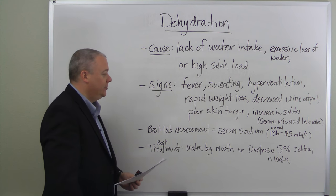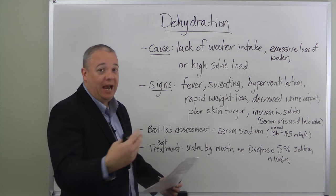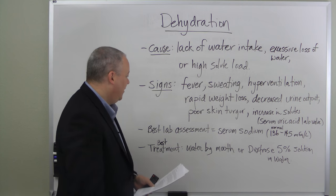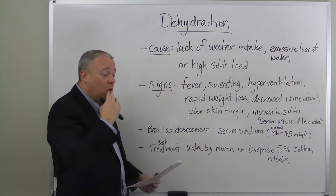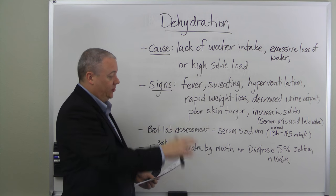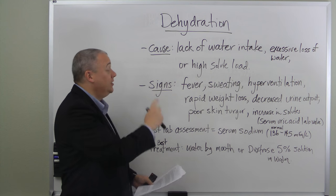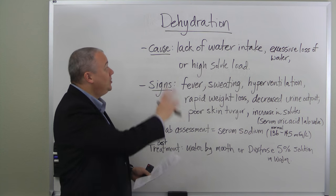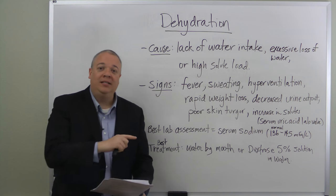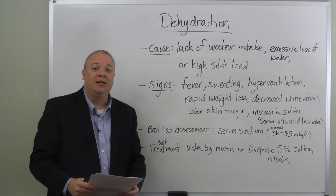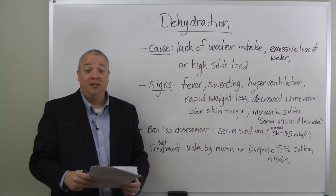The best lab assessment for dehydration is to test for serum sodium. The normal level is 136 to 145 mEq/L — if it's outside that range, you have a strong case for dehydration. The best treatment is to rehydrate the body by taking water orally, or by putting a five percent dextrose solution in water. If the body cannot process it orally, it must go in intravenously. The best way to treat dehydration is to drink plenty of water.